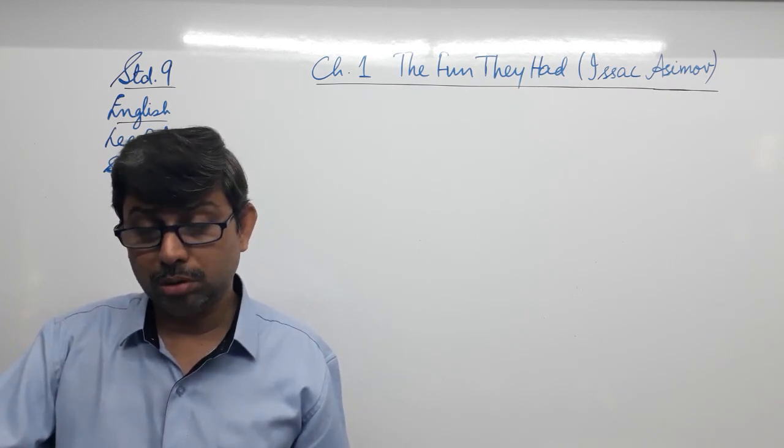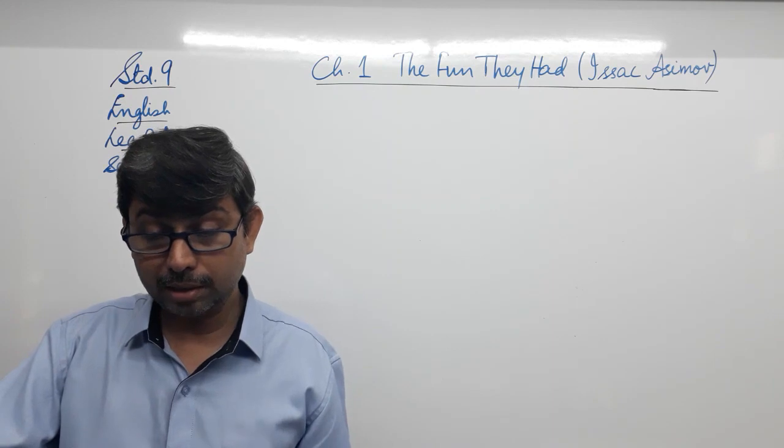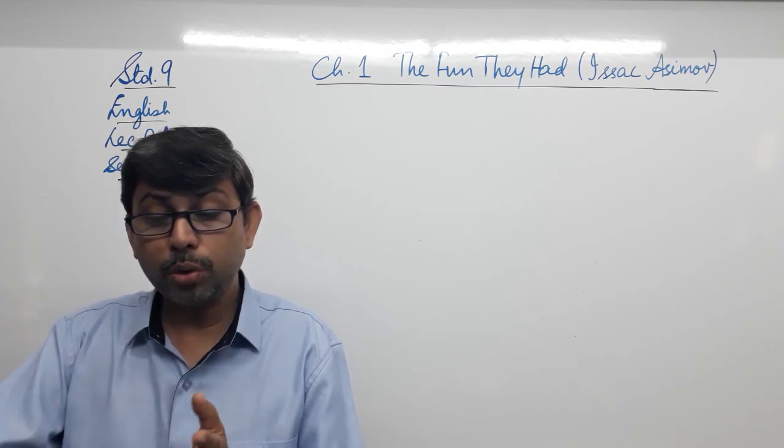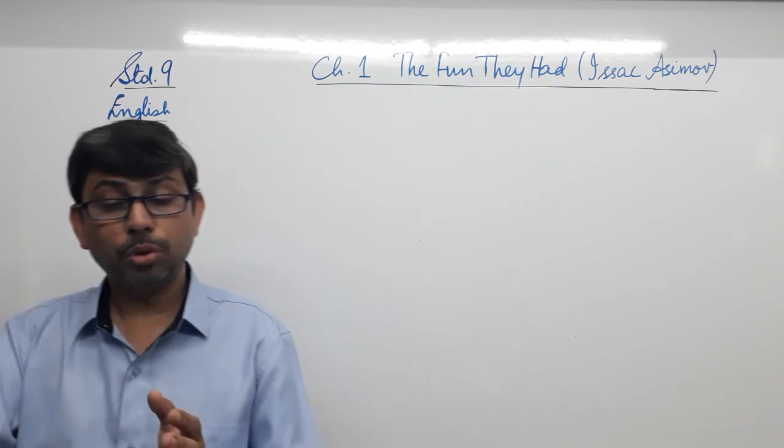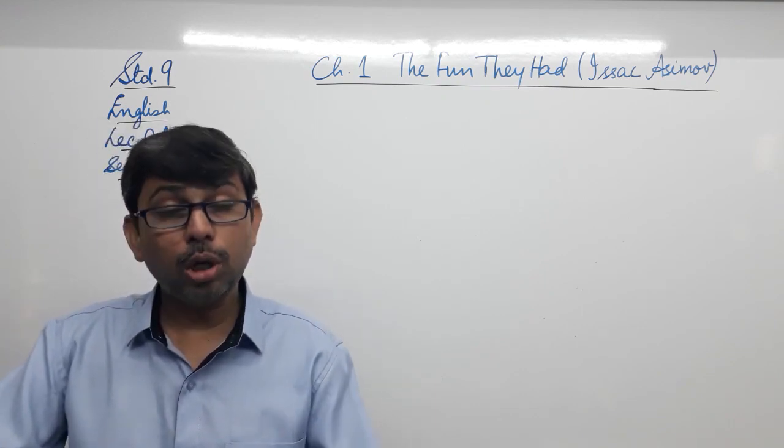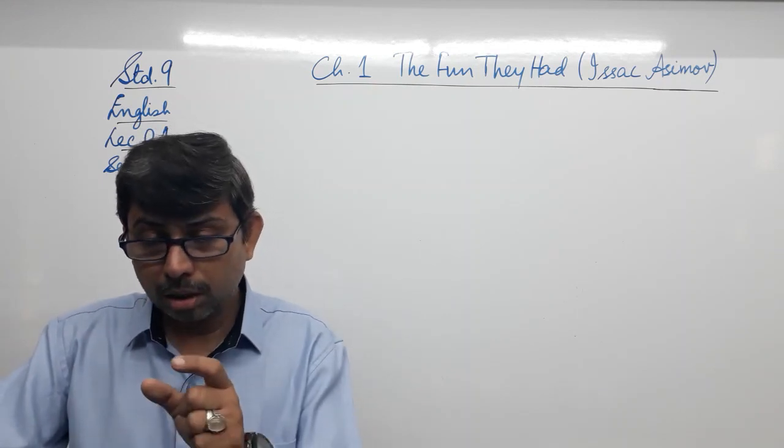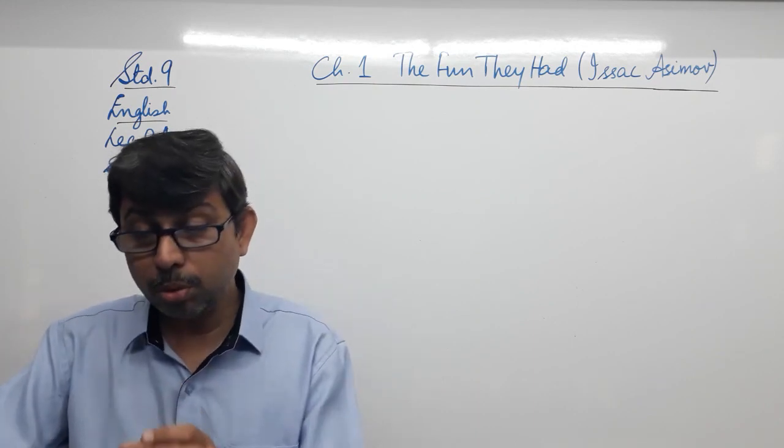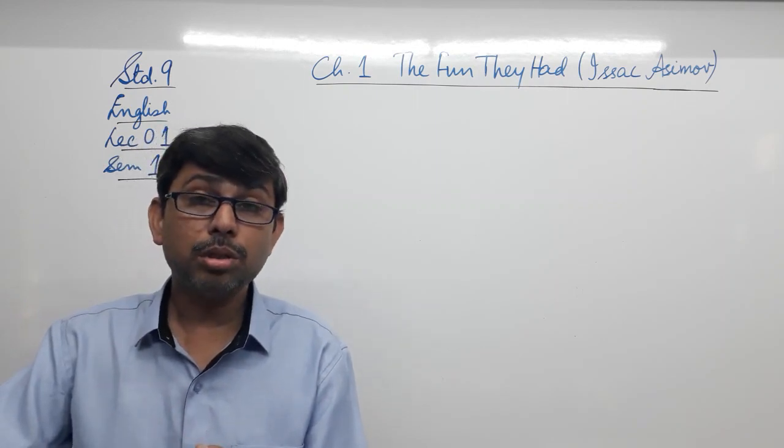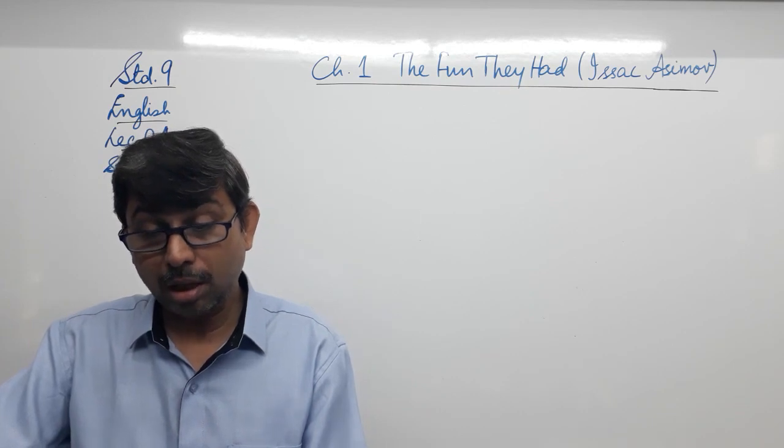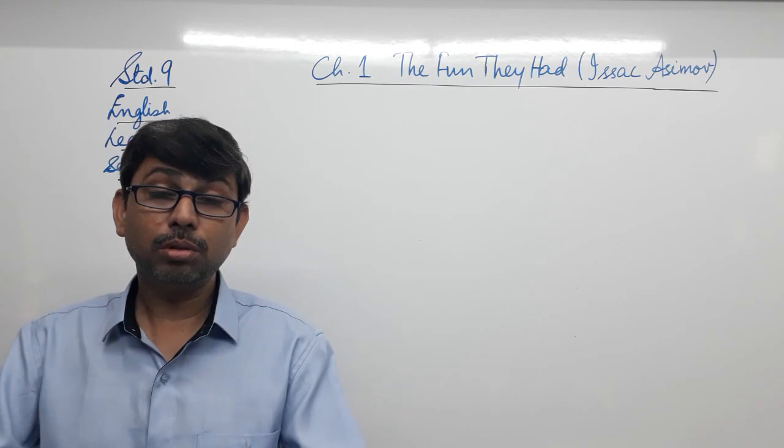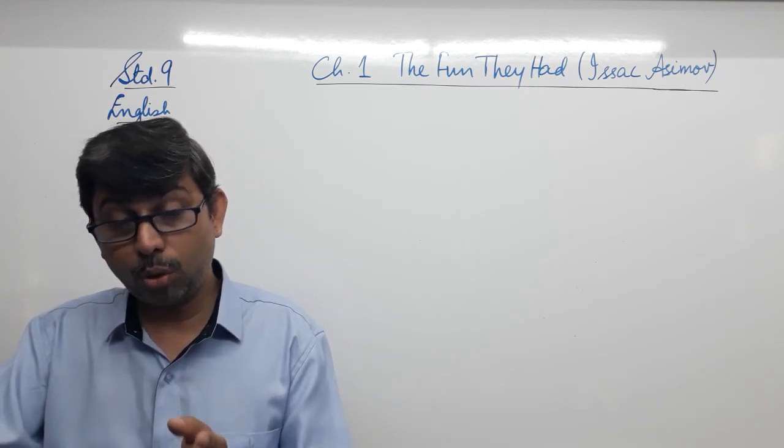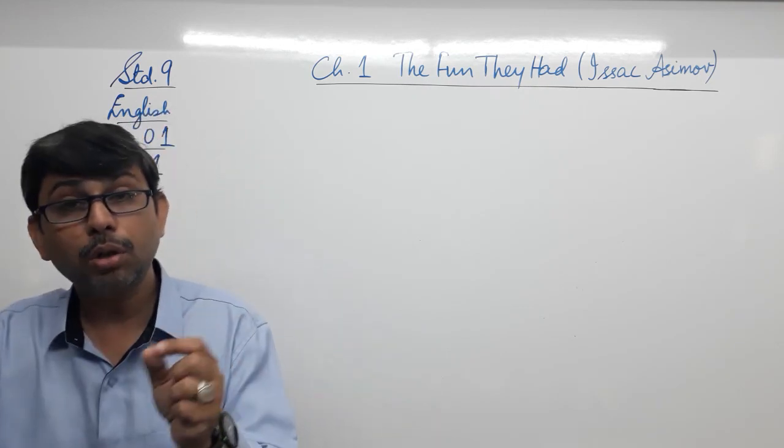That would be the situation. Therefore, Margie has written in her diary on her page, putting the heading or the date, dated 17th May 2157. Today Tommy found a real book. So it is a surprising sentence that she has written. Well, here builds up the entire story. It was a very old book. Margie's grandfather once said that when he was a little boy, his grandfather told him that there was a time when all stories were printed on paper. So what is Margie recalling over here? She is trying to recall along with this confirmation that the book that they have or what she had seen is a very old book.